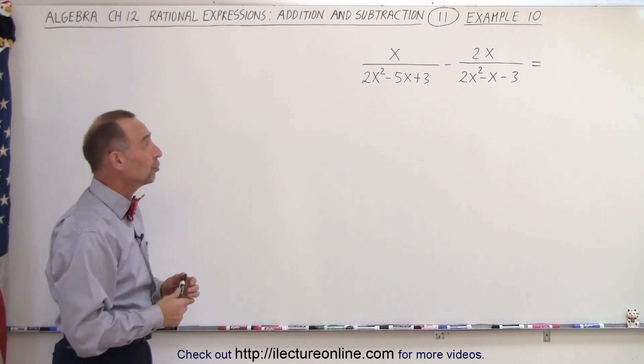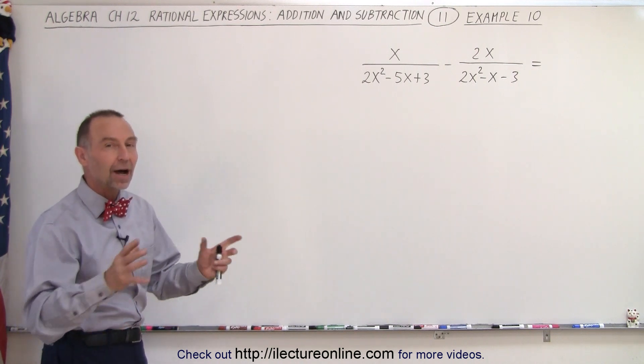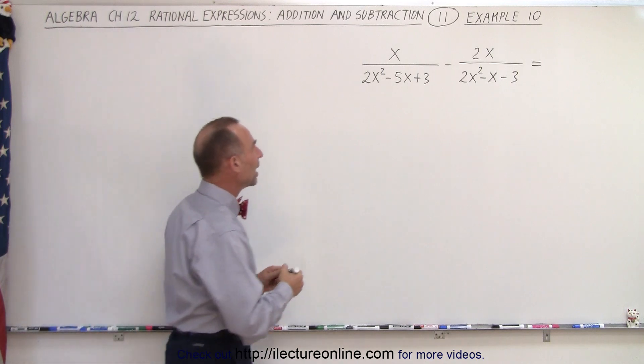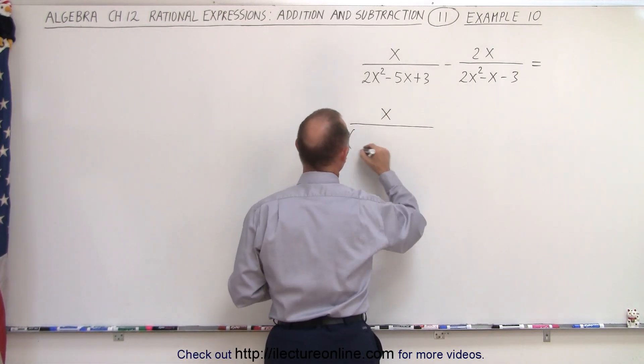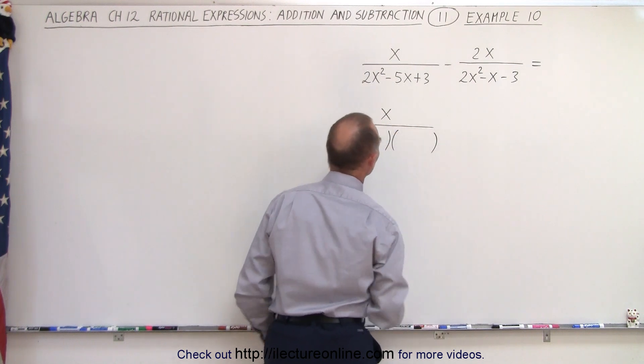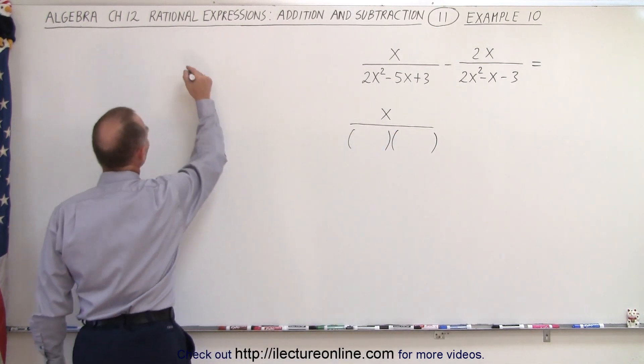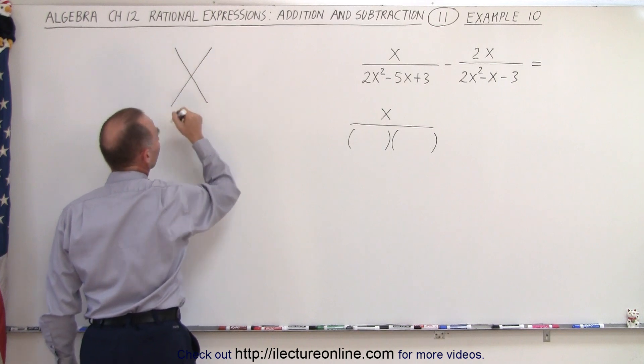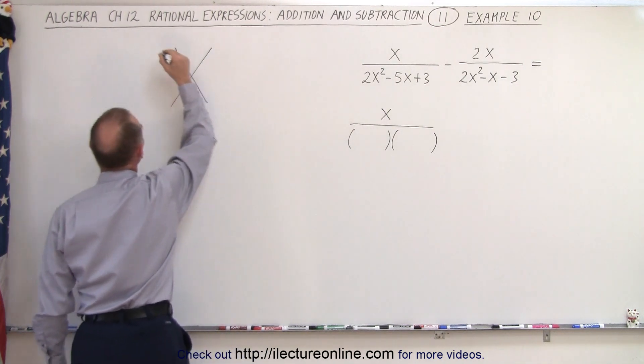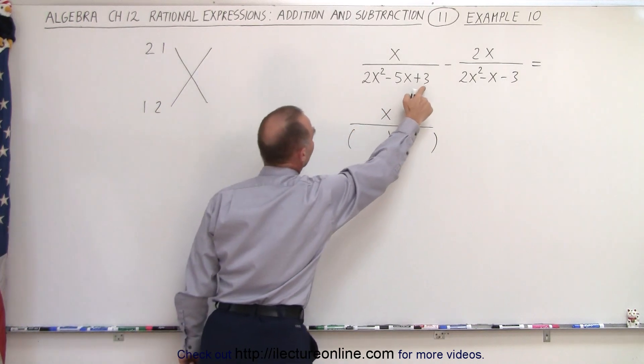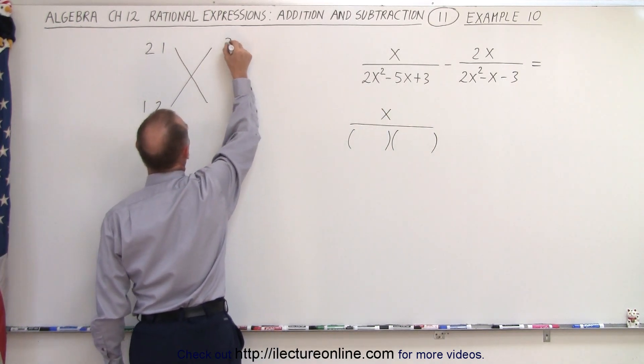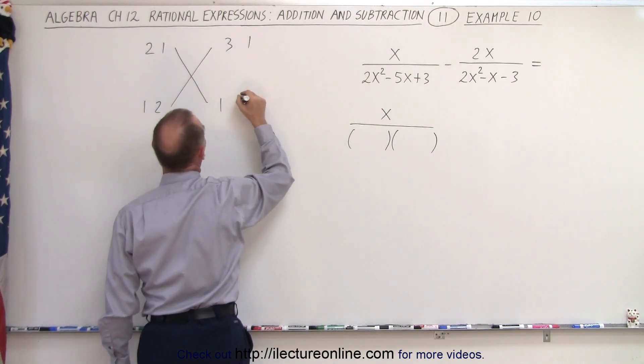We should start with factoring the two denominators so we can figure out what the common denominator is. The numerator stays the same and in the denominator we're going to have the product of two binomials. We can use the FOIL method to help us with that. In the front we have a 2, that means we need a 2 and a 1. And in the back here we have a 3, so that means we have a 3 and 1 or 1 and 3.